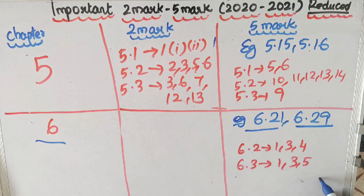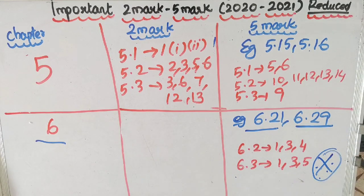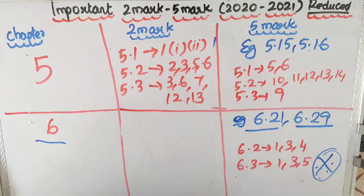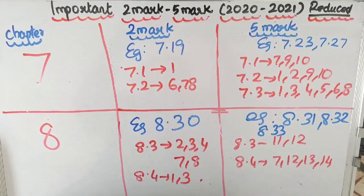In the sixth chapter, examples 6.21 and 6.29 are important. 6.2 exercise questions 1, 3, and 4 are important. 6.3 exercise questions 1, 3, and 5 are important. These cover the 2-mark and 5-mark questions in the sixth chapter.